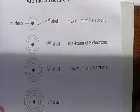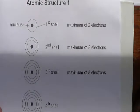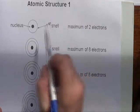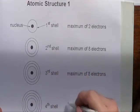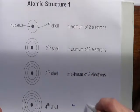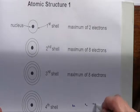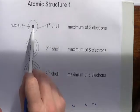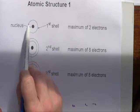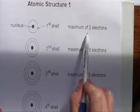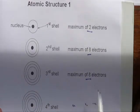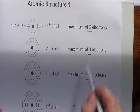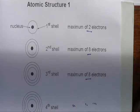Let's look at electron arrangement first. How are these electrons arranged? They are arranged in shells around the nucleus. They fill from the first shell outwards — the first shell holds two electrons, and all other shells at GCSE level hold eight electrons.